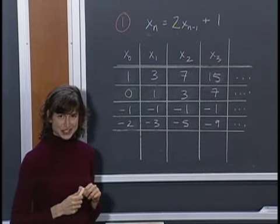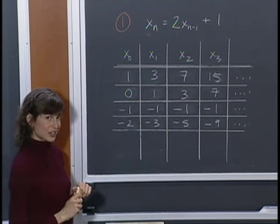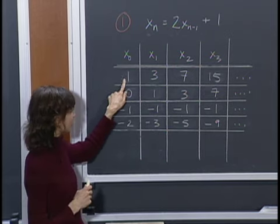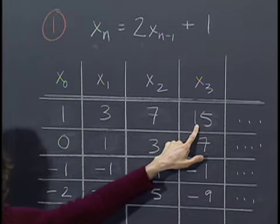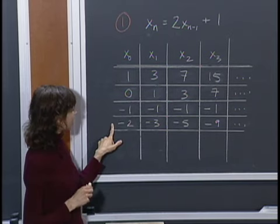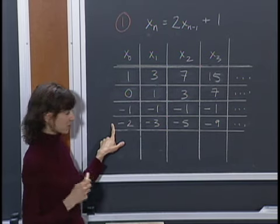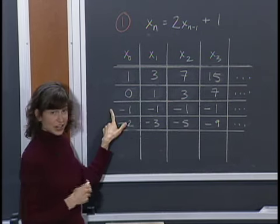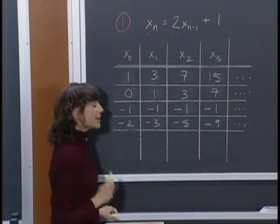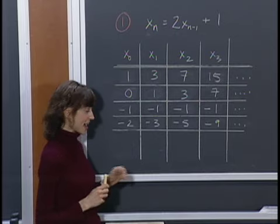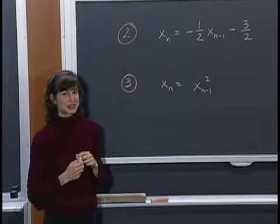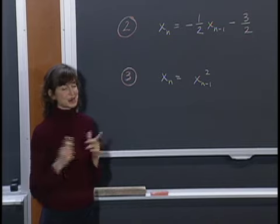So are there any patterns in these trajectories? When the initial condition is greater than -1, the trajectories tend to get more and more positive, growing without bound. When the initial condition was less than -1, the trajectory became more and more negative. But when the initial condition was exactly -1, the trajectory always stayed the same. Here are more difference equations for you to try — choose some initial conditions, compute a few trajectories, and see what interesting patterns you can discover. Collect your answers and we'll come back together.